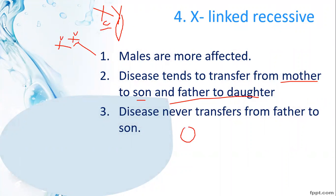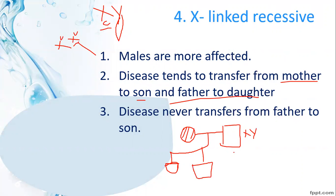Example: an affected female (homozygous recessive) marries a normal man. Their offspring: girl child receives father's normal X and mother's affected X — she is a carrier but unaffected. Boy child receives mother's affected X and father's Y chromosome — he is affected. In another cross, girl child may be affected and male child may be affected. This confirms X-linked recessive, with transfer from mother to son.